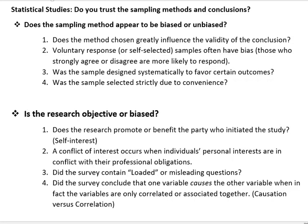The third one is: was it designed systematically to favor certain outcomes? For example, if you want to prove that we need more parking spaces on campus and you go out to sample the population, did you specifically walk up to people who are sitting in their car waiting for a spot and ask, 'Do you think we need more parking spaces here?' — so that you definitely asked the people likely to give the responses you were looking for.